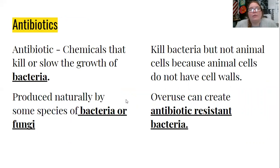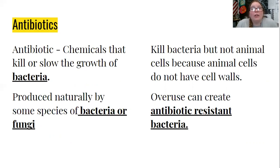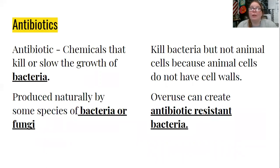Antibiotics are chemicals that kill or slow the growth of bacteria and only bacteria. There are antivirals and antifungals, but they're a different category of medicine. Some antibiotics are actually produced naturally by bacteria and fungus. Antibiotics whose names end in '-mycin' — that root comes from fungus; a myconid is a fancy word for a mushroom. Originally those came from bacteria. Penicillin was discovered because someone let mold grow on a Petri dish and found out it killed bacteria. Antibiotics can kill bacteria but not animal cells because animal cells don't have cell walls.